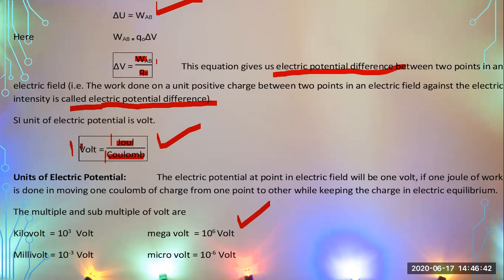The SI unit of electric potential is the volt. One volt is defined as: when one joule of work is done on a one-coulomb charge, moving it from negative to positive plate while keeping it in electrostatic equilibrium, the electric potential at that point is one volt.